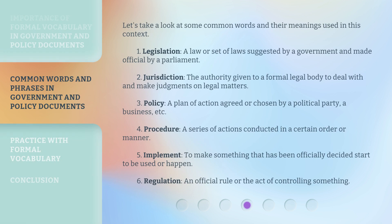Let's take a look at some common words and their meanings used in this context. 1. Legislation: a law or set of laws suggested by a government and made official by a parliament. 2. Jurisdiction: the authority given to a formal legal body to deal with and make judgments on legal matters. 3. Policy: a plan of action agreed or chosen by a political party, a business, etc. 4. Procedure: a series of actions conducted in a certain order or manner. 5. Implement: to make something that has been officially decided start to be used or happen. 6. Regulation: an official rule or the act of controlling something.